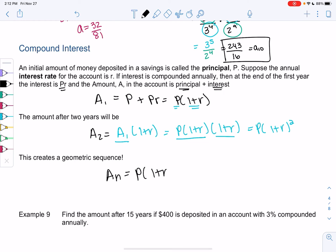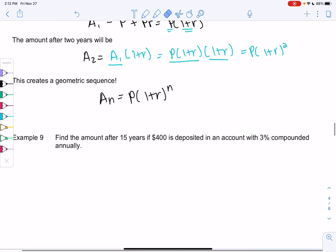Let's find the amount in the account after 15 years if we deposit $400.